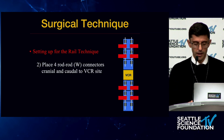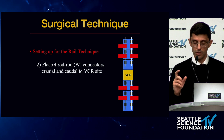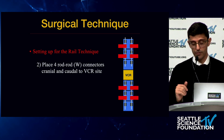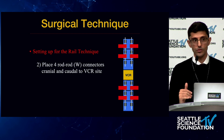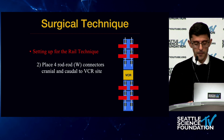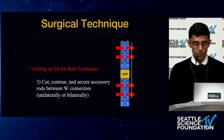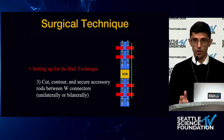This is followed by placing W connectors — at least four above and four below — as close to the VCR site as possible. That is then followed by cutting, contouring, and placing your accessory rods between those W connectors laterally.